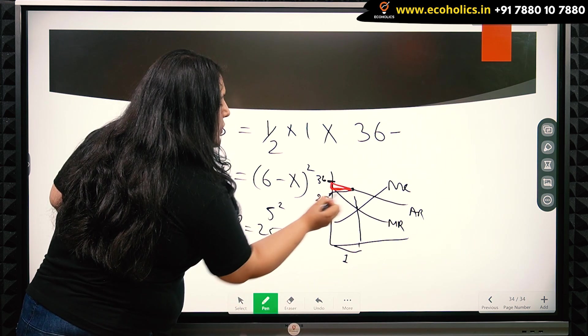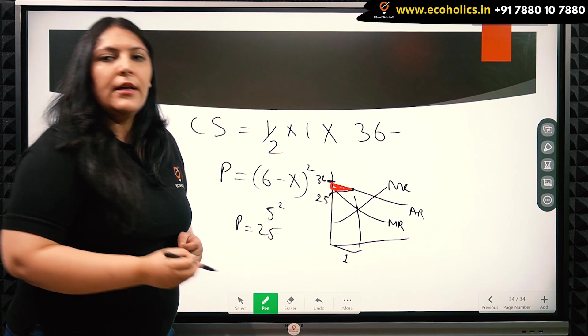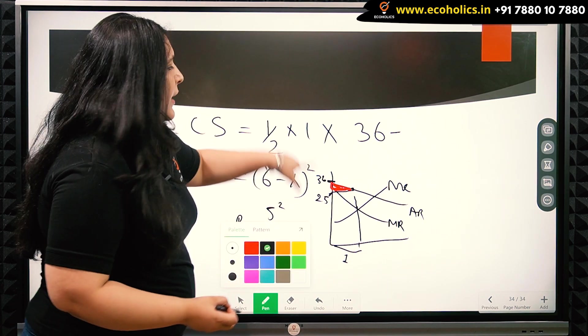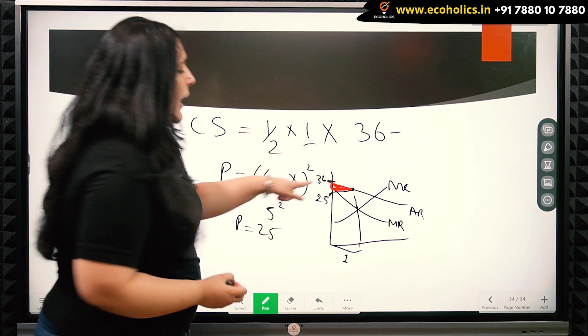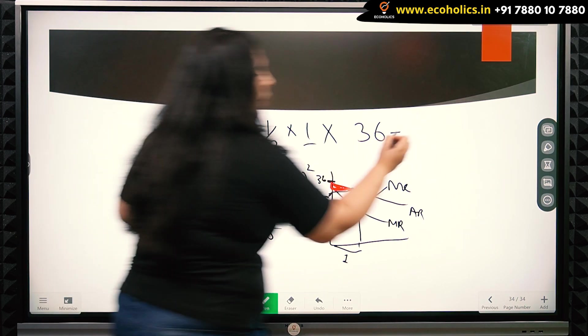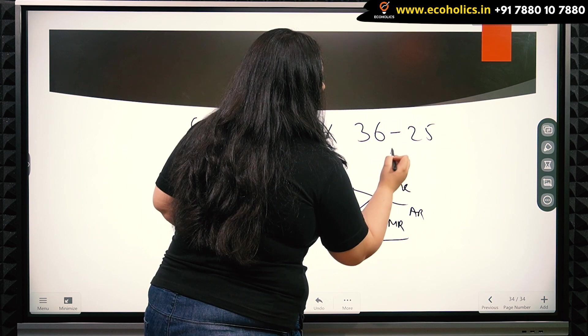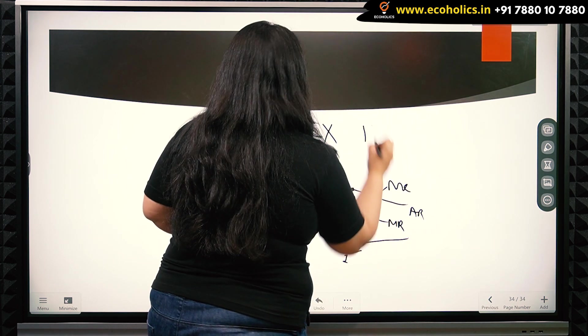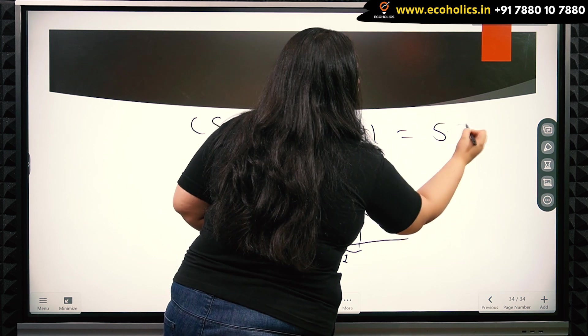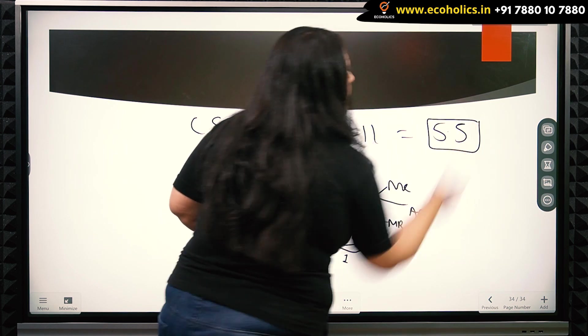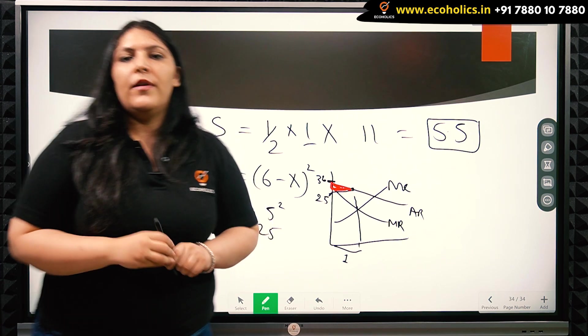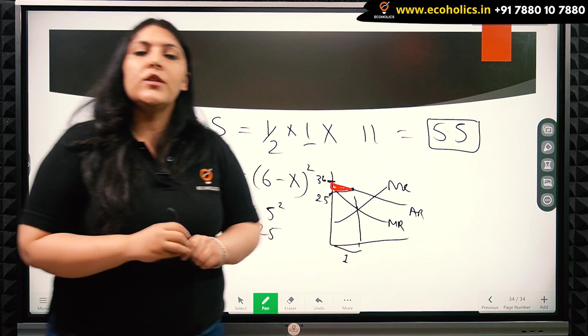The area of this triangle which is representing the consumer surplus is half times base which is 1 times 36 minus 25 which is 11. So we have 11/2 or 5.5 as the consumer surplus for the monopolist. So this is how we will solve any question pertaining to consumer surplus.